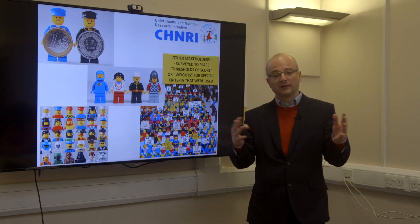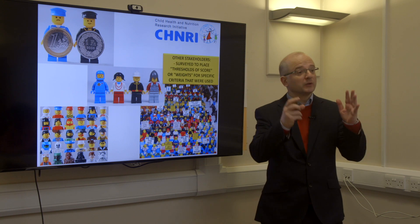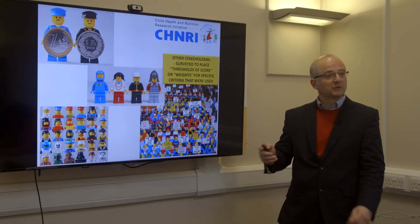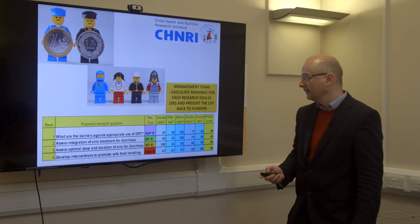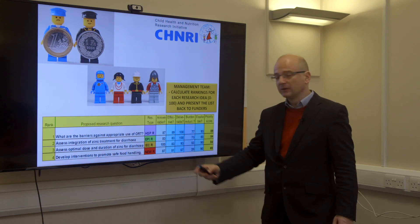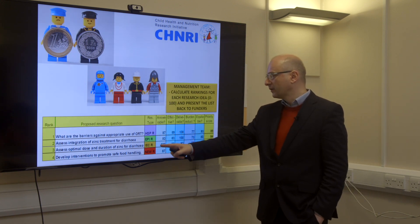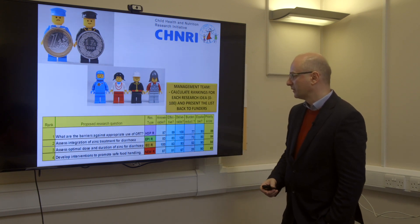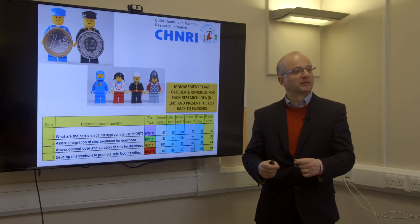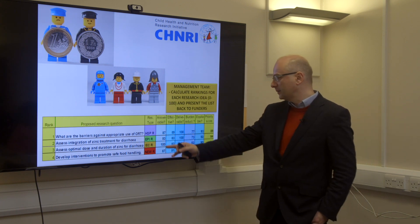Your typical consensus development process before CHNRI was background reading, a round one of discussion in Delphi, expert interaction, feedback to experts, a second round of discussion, and then consensus on priorities. This sounds good, but the trouble is it's not replicable — it's entirely subjective based on who takes part. Whereas the CHNRI method does not require any background reading, any discussion or interaction between people at all. All they do is submit their personal individual opinion. Then you give them feedback, and you can even do agreement statistics. There is no need for consensus, because you simply average their input — they don't have to agree among themselves, but you still get the collective opinion.